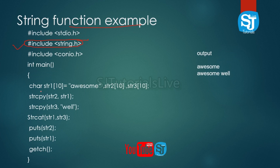The first string, str1, is "awesome story". str2 is initialized as blank (one space). Then strcpy(str2, str1) copies str1 into str2. The right-hand side is str2. After strcpy, str2 becomes "awesome".